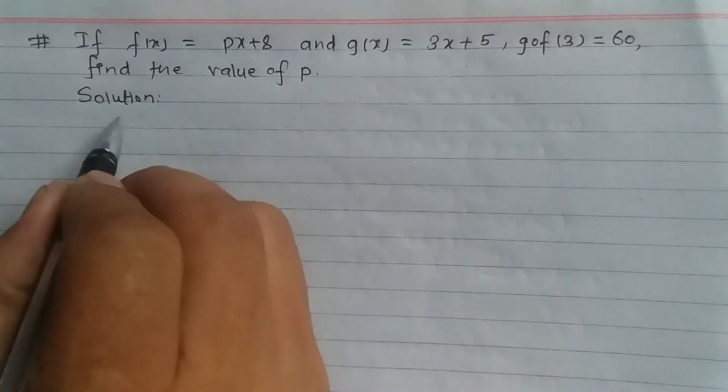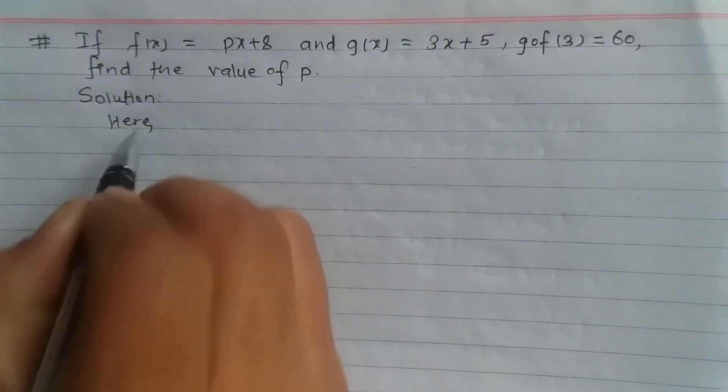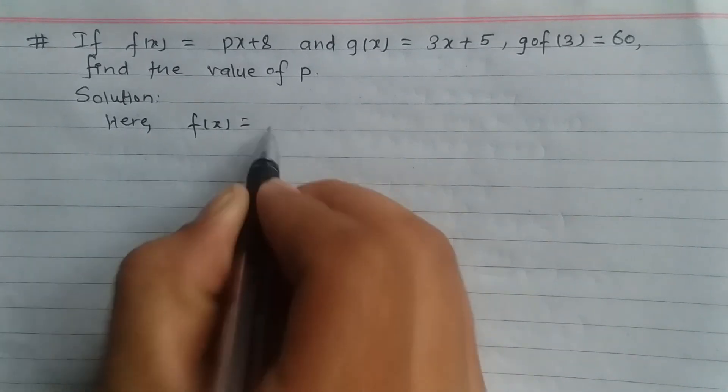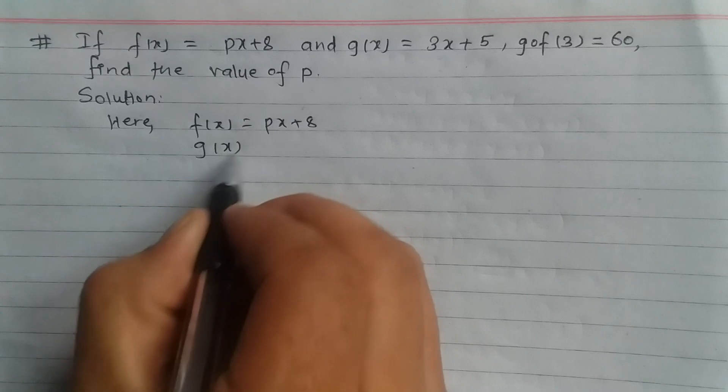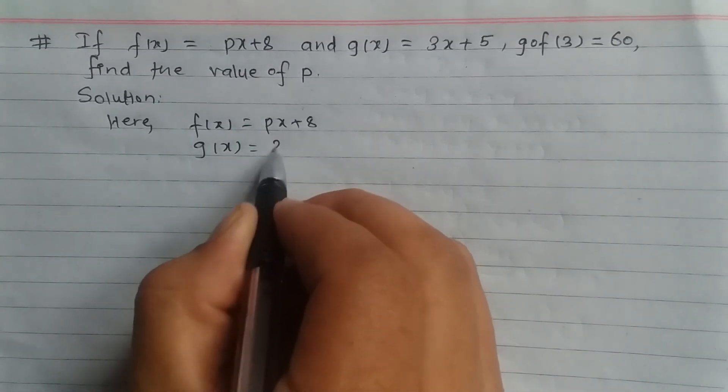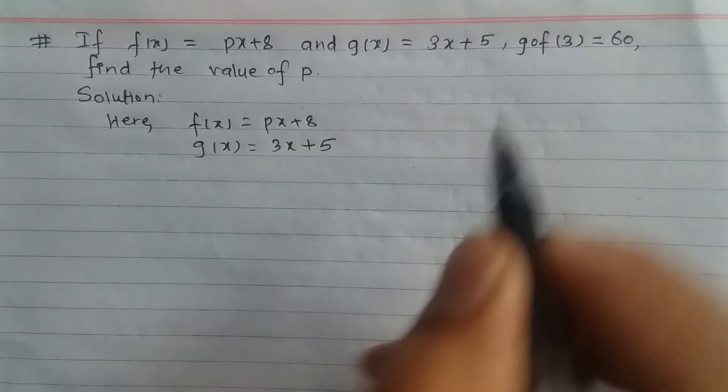Solution: Here, f(x) = px + 8 and g(x) = 3x + 5.